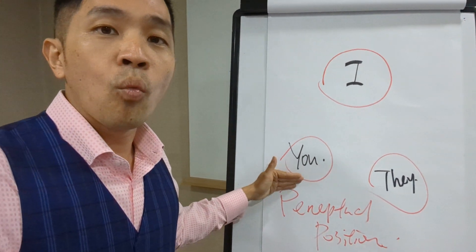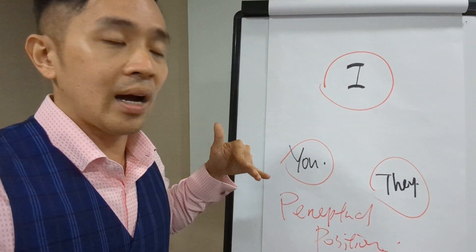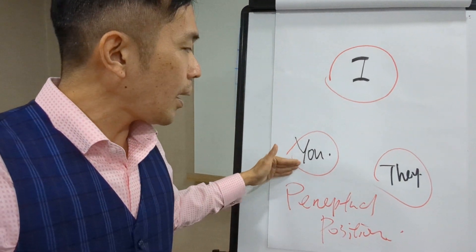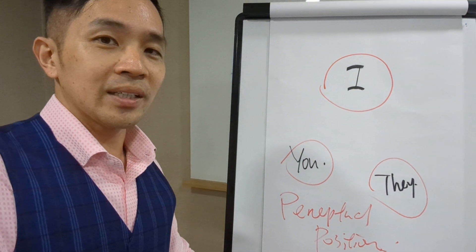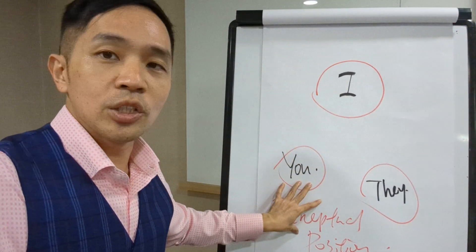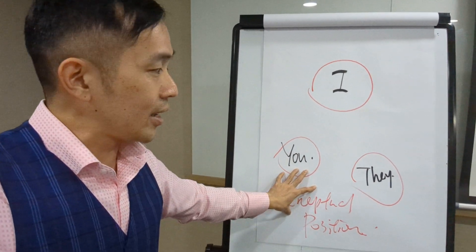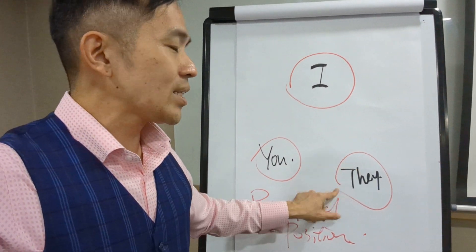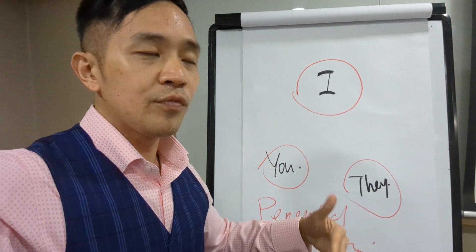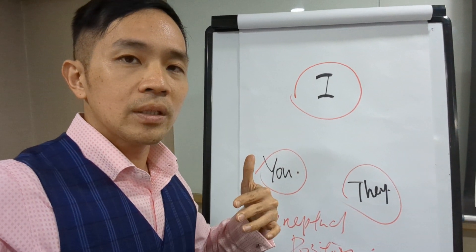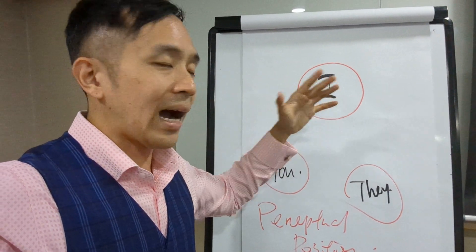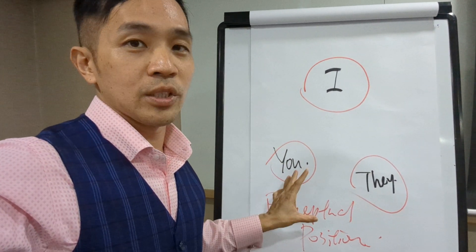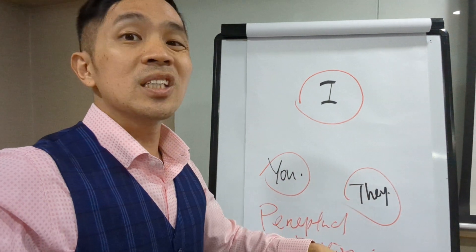I'm able to understand what are some of the bottom line, what are the key things that they are pursuing, their goals that they want to achieve. Here's where things get really interesting because beyond the 'I' and the 'you' position, there's a third position which is known as the 'they' position. If you could just step out even from your position.